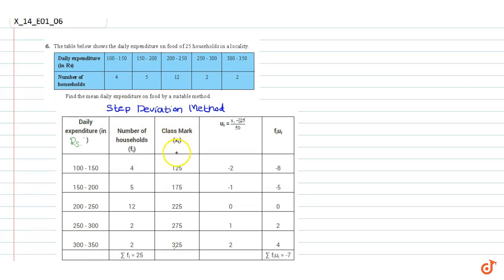The classmark xi shows the mean value of daily expenditure in the ith interval. For example in the first interval between 100 and 150 the mean value is 125. In the second interval between 150 and 200 the mean value is 175 and so on.